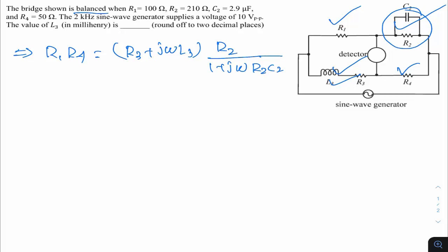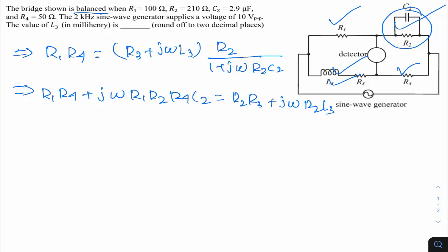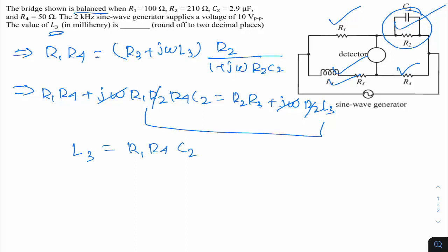After cross-multiplication: R1·R4 + jω·R1·R4·R2·C2 = R2·R3 + jω·R2·L3. To find L3, equate the imaginary parts. The jω and R2 cancel from both sides, leaving L3 = R1·R4·C2. Substituting: R1 = 100, R4 = 50, C2 = 2.9 × 10⁻⁶.